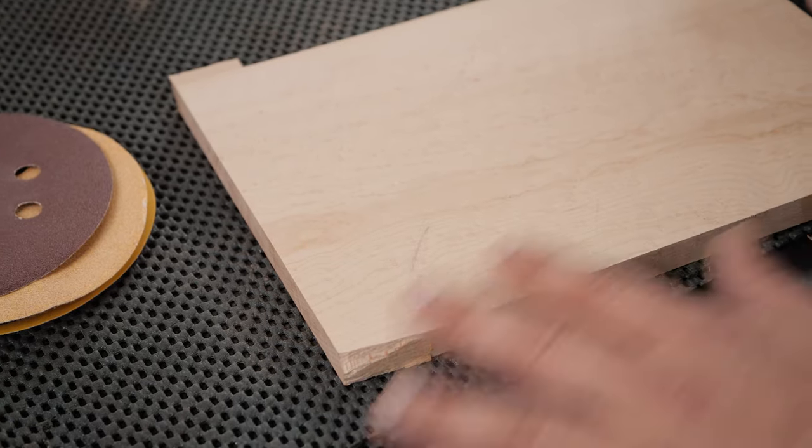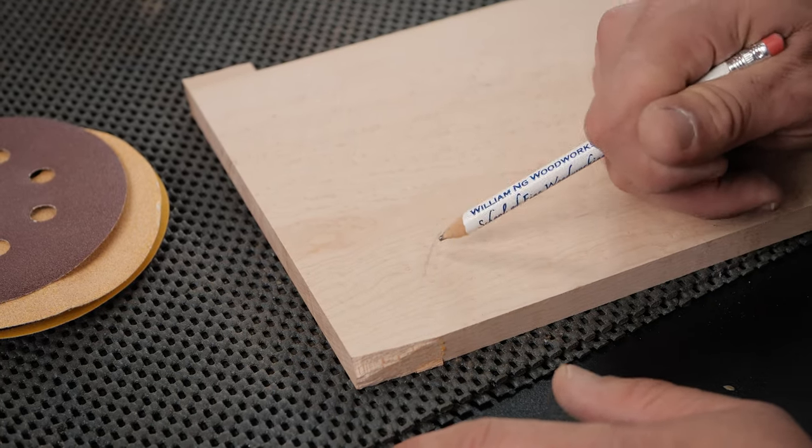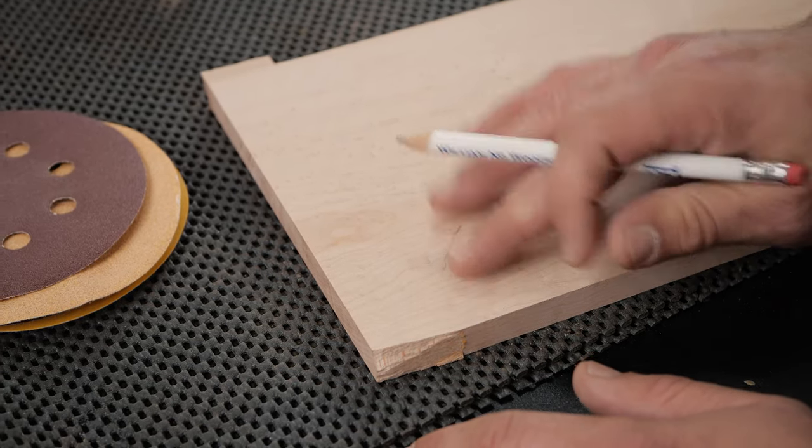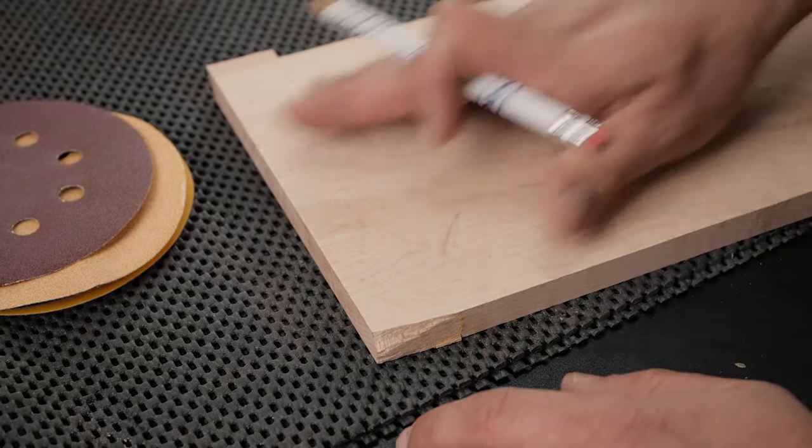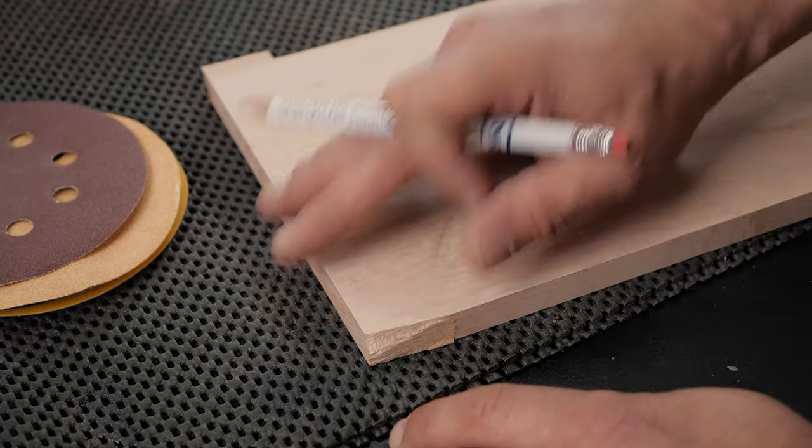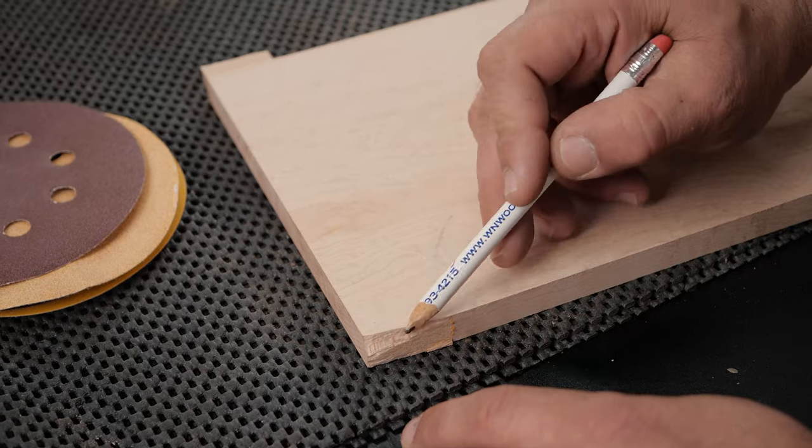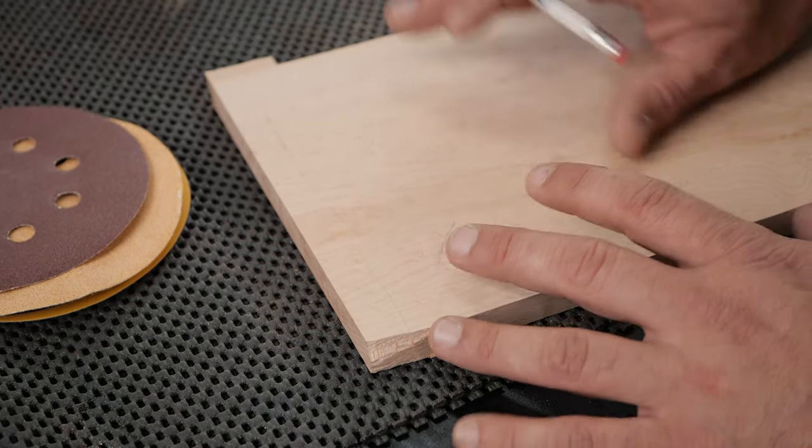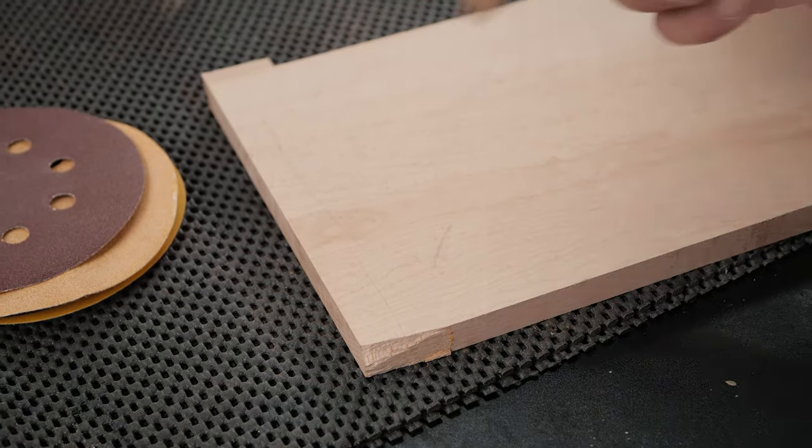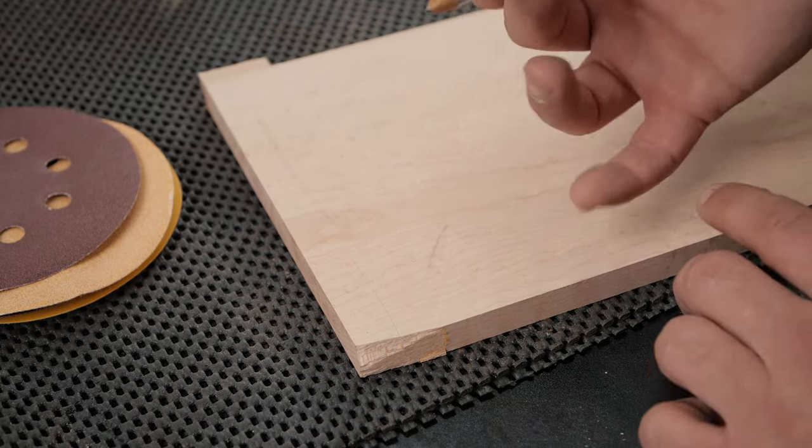As you can see, we did our whole 80-grit here, and I do have one low spot in here where the pencil is kind of faint. Instead of going over this area and trying to get down to that, I'm just going to go one more time with 80-grit. Once you get it flat with 80, you should be pretty good as long as you continue to use the pencil trick every single time.